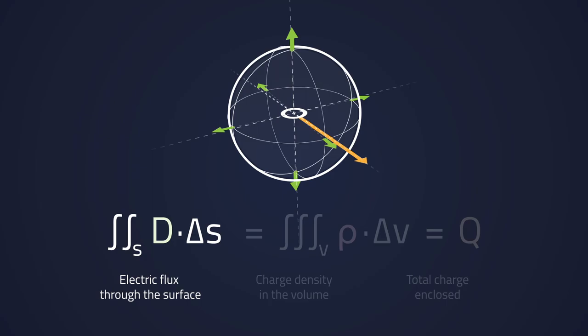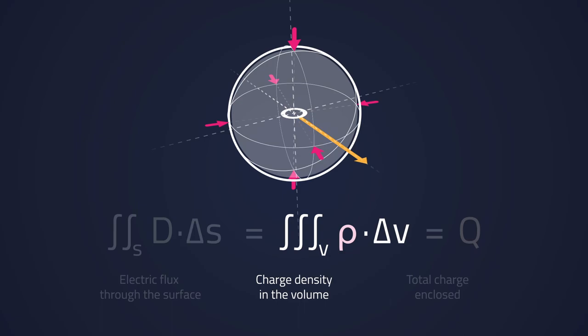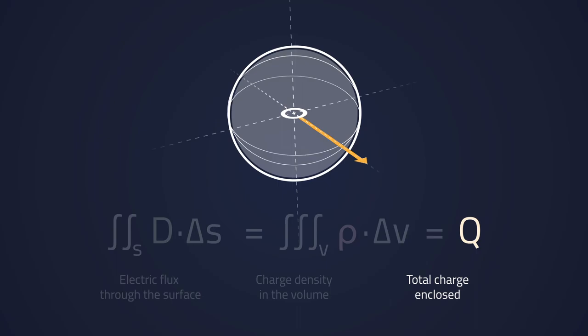To describe electric field lines we can fruitfully make use of Gauss law. The electric flux through any closed surface equals the charge enclosed by that surface.